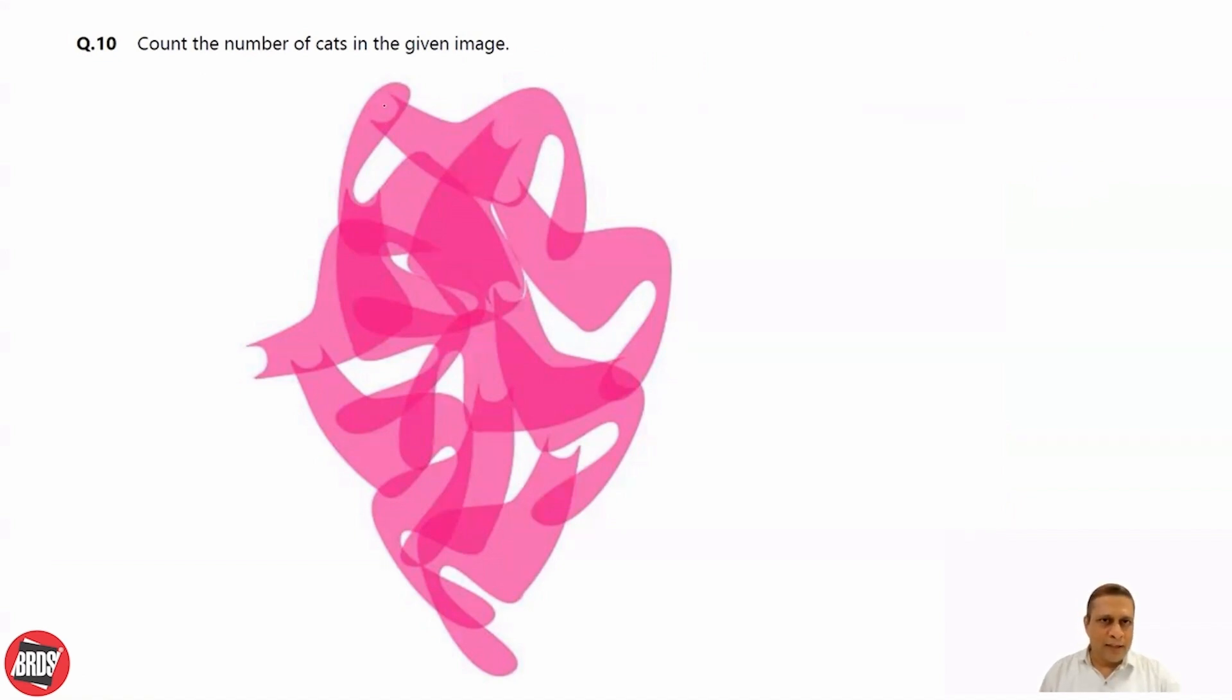So you can see this is the cat, this is the head and this one is the tail. So let's consider the tail of the cat and count how many tails are there. So we can see the tail of the cat.